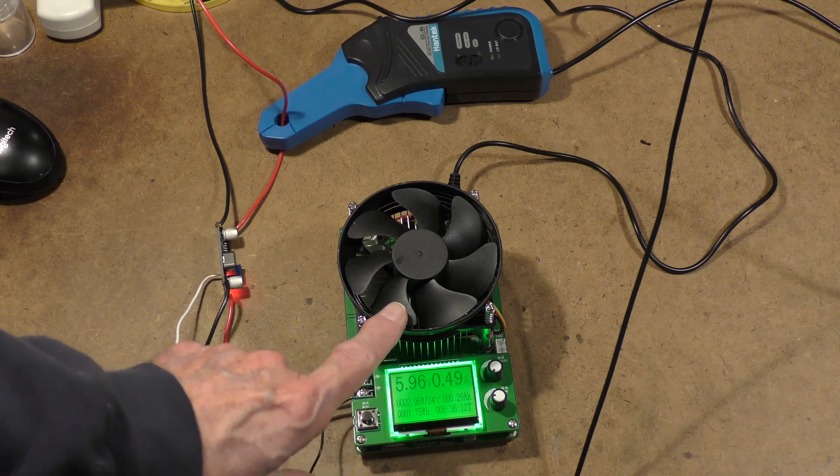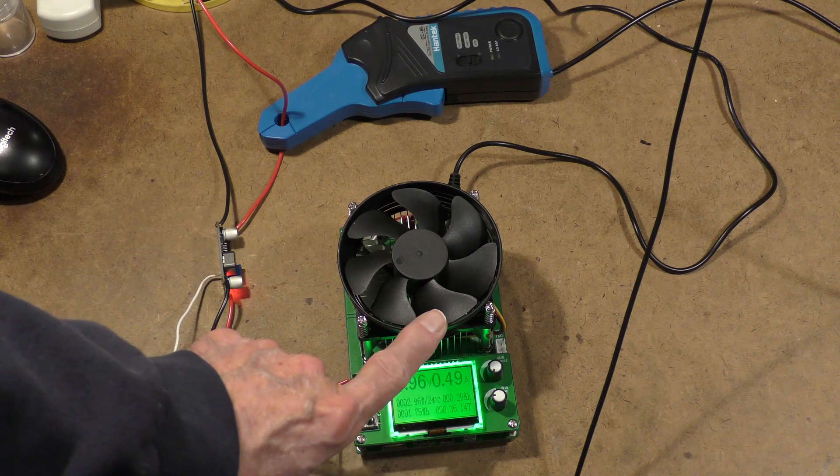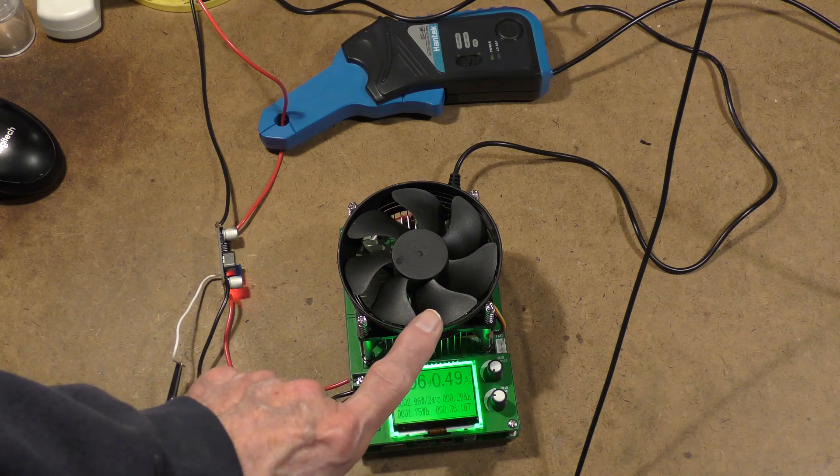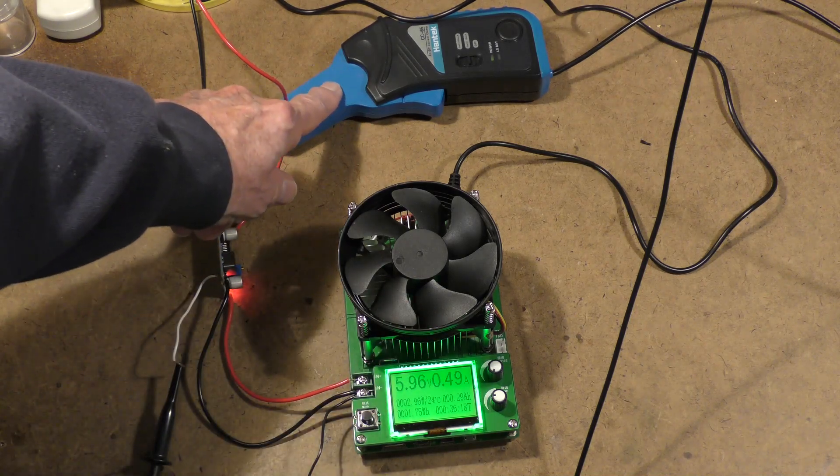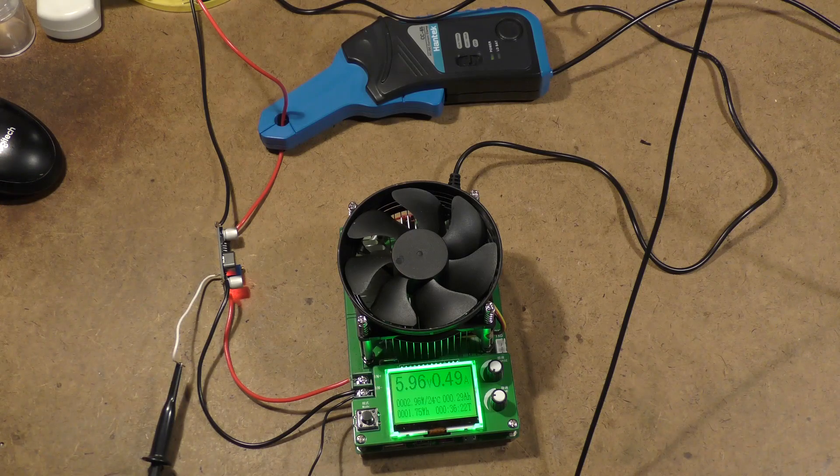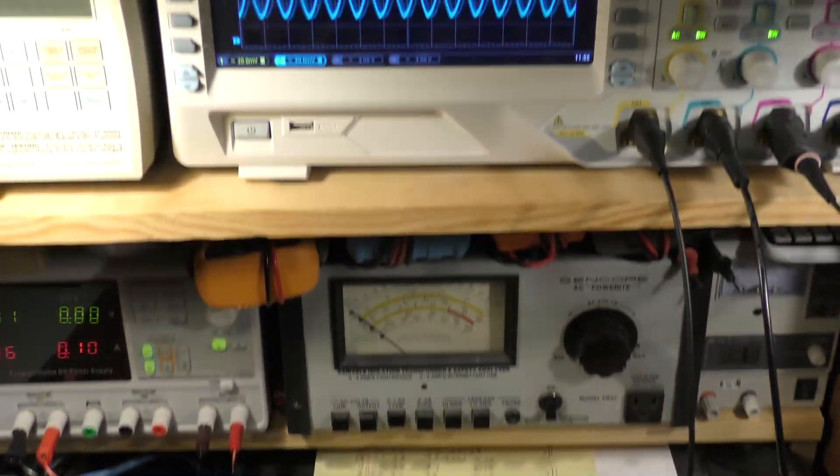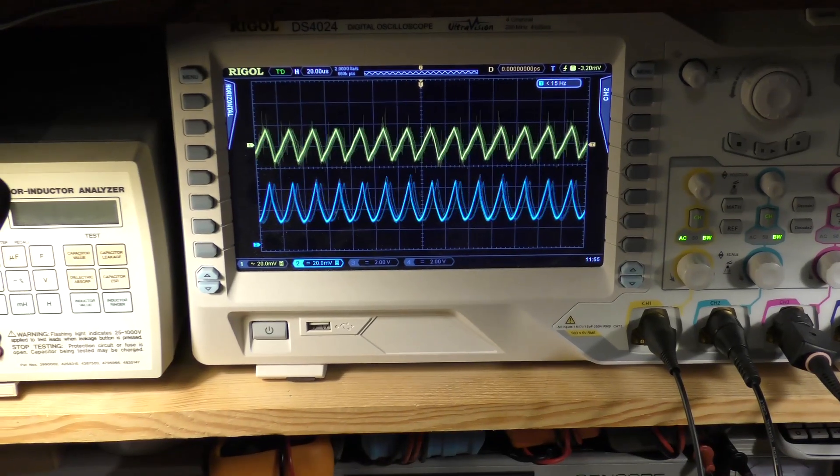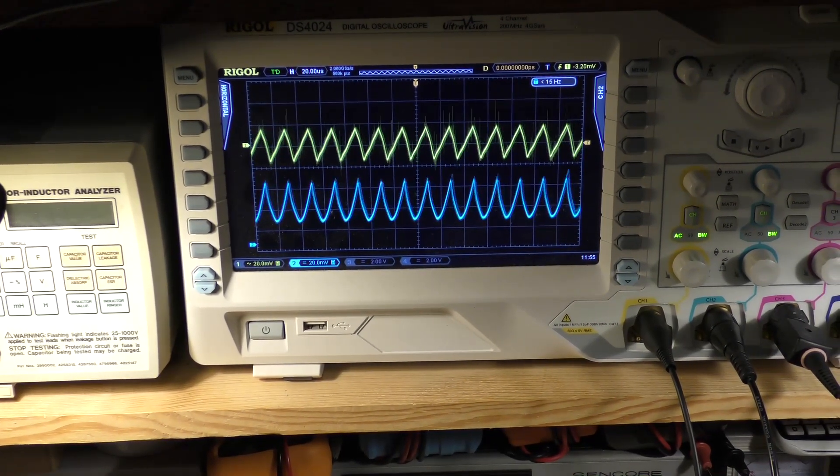What you see here is an electronic load. You'll see lots of videos on this on YouTube as well, and a Hantech current probe. What I'm doing is looking at the waveforms of the buck converter.